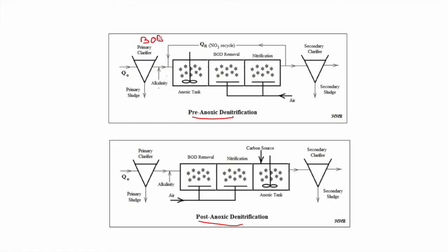For pre-anoxic denitrification, the carbon source needed for denitrification comes from the BOD in the primary clarifier effluent. Since the BOD removal tank comes after, the BOD concentration is still high — around 70% remains after the primary clarifier removes about 30%. However, we do need to add the nitrate nitrogen (NO3) produced by nitrification, so we recycle and pump water back from the nitrification tank into the anoxic tank.